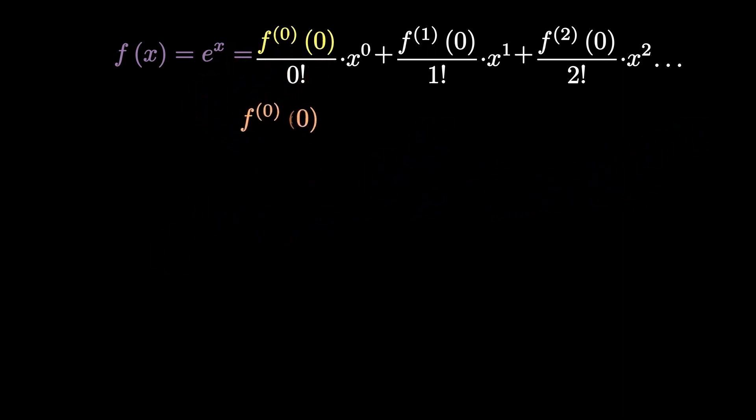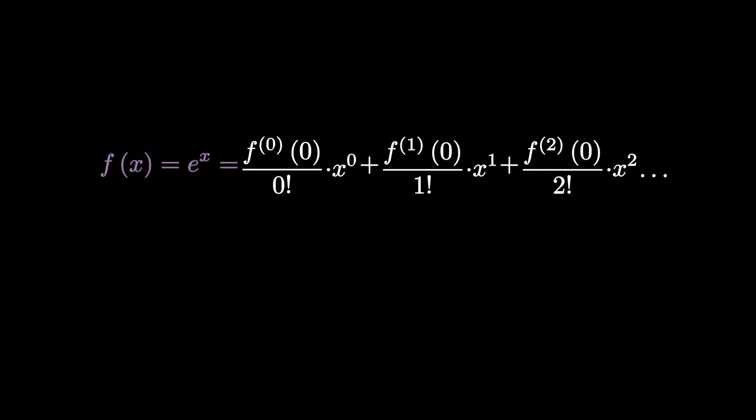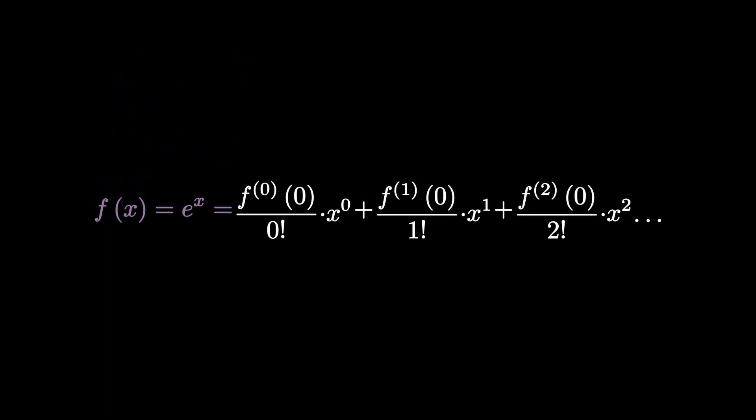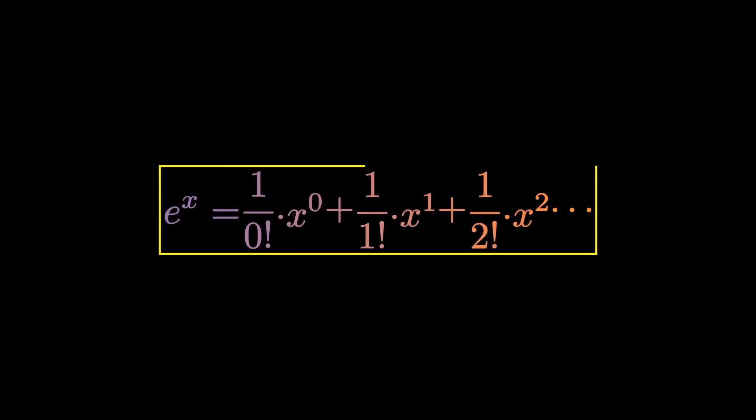Taking that into consideration, let's evaluate each of these derivatives at x equals 0. Since e^0 is 1, all of these derivatives evaluate to 1. What's left is just to substitute these values into the Maclaurin definition of e^x. And then we have the Maclaurin series for e^x.